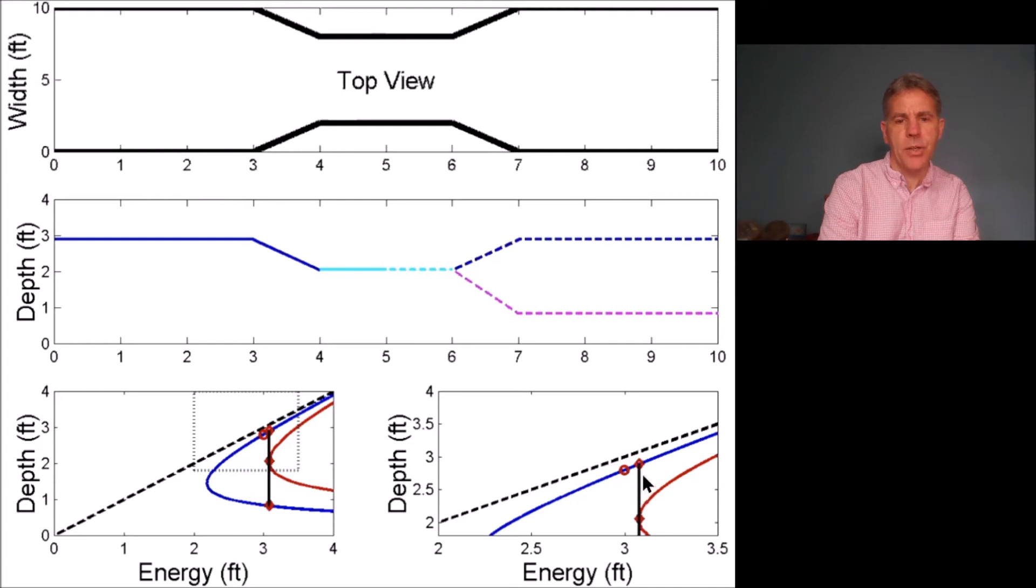In essence, as the constriction gets smaller, the choke is requiring that the flow back up upstream of the constriction and that more energy be gathered in order to satisfy continuity through the constriction.